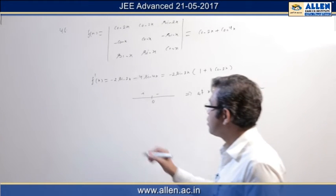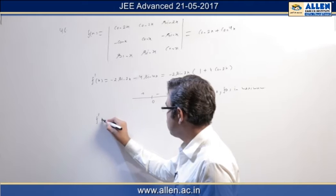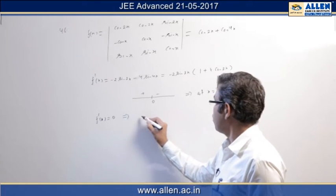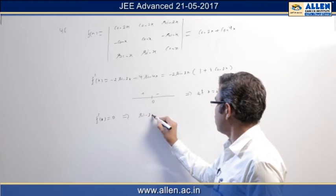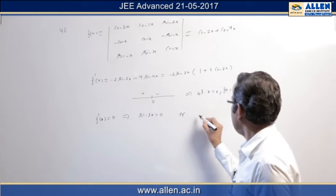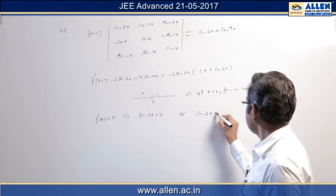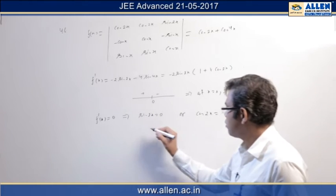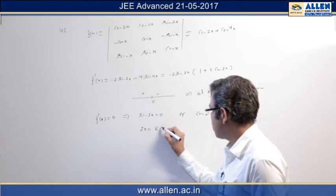Now the second part, second option says how many zeros are there of f'(x). So if I plug f'(x) equal to zero then this will imply sin 2x equal to zero or cos 2x equal to minus 1 by 4.